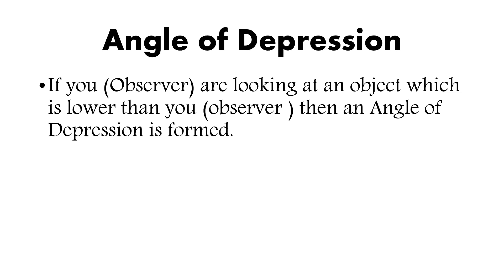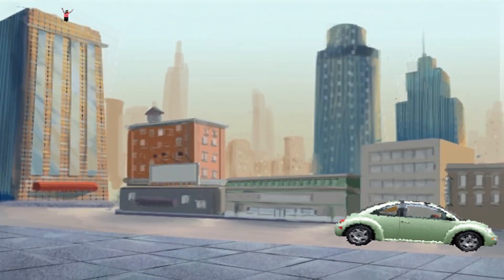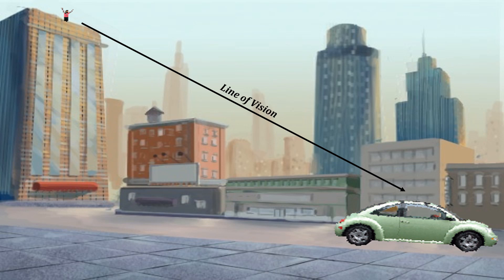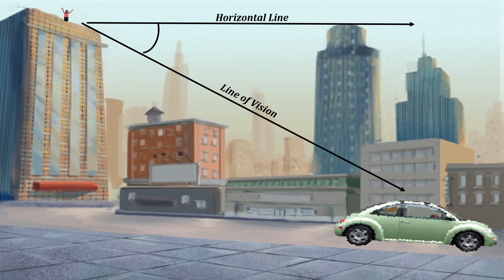We will try to understand angle of depression with the help of an example. Look in the picture. There is a boy standing on the top of a building, and he is observing a car which is running on the road. The line from the observer to the car is known as the line of vision, and the line from the observer — the boy — towards the car is known as the horizontal line.